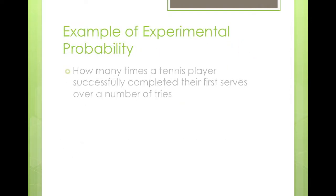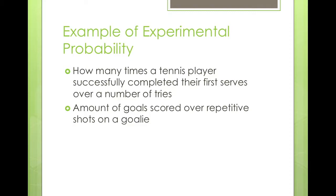Some examples: how many times a tennis player has successfully completed their first serves over a number of tries. If over 50 tries they completed 25 first serves, the probability would be 25 over 50, or 50 percent. Another example would be the number of goals scored over repetitive shots on a goalie — soccer or hockey. You can calculate the percentage by the number of goals actually scored on the goalie.